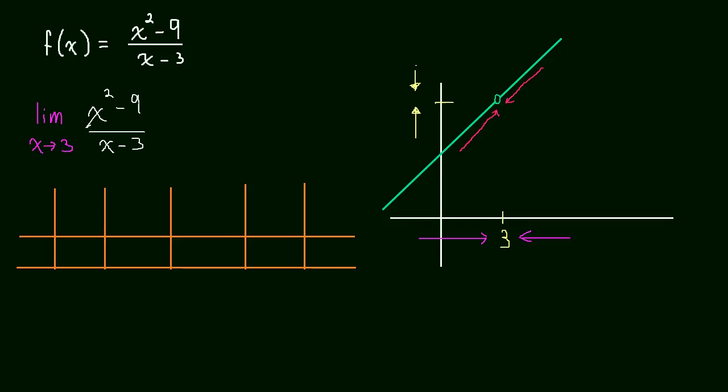So let me pick x values like, so these are going to be x values. These are x values. So let me pick something like 2.9, that's pretty close to 3, 2.99, 2.999.